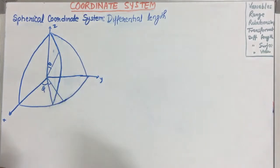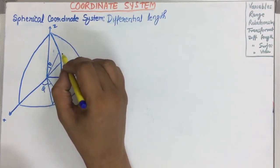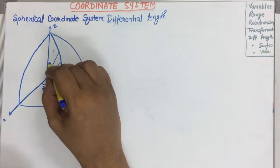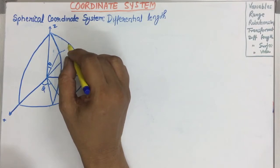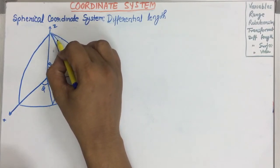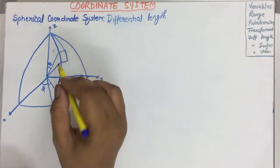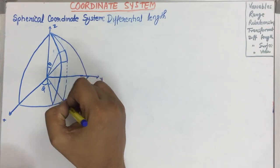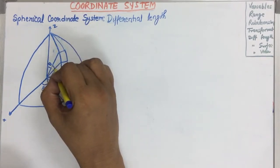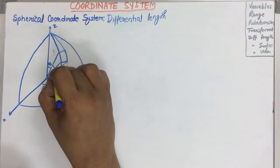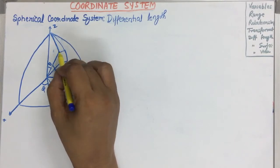A small angular displacement in the XY plane is made, that is dφ, and a small angular displacement in case of θ is done here. This displacement is reflected here, and this displacement is reflected here. This is the differential object — suppose the part of the radius is considered this one.